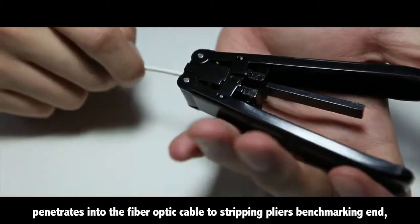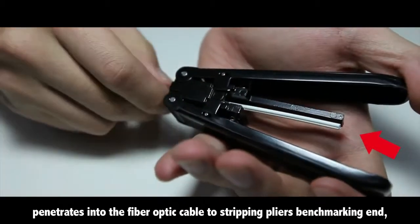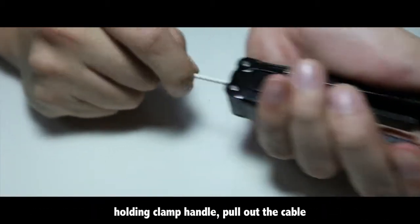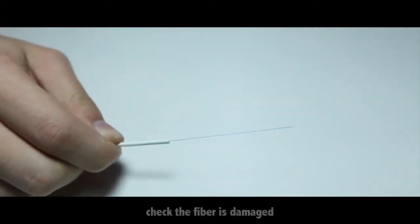Penetrate the fiber optic cable into the stripping pliers at the benchmarking end. Hold the clamp handle and pull out the cable.